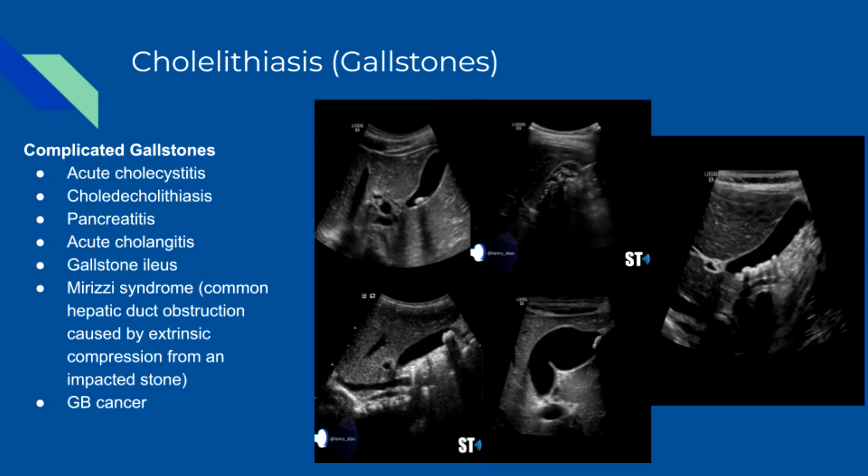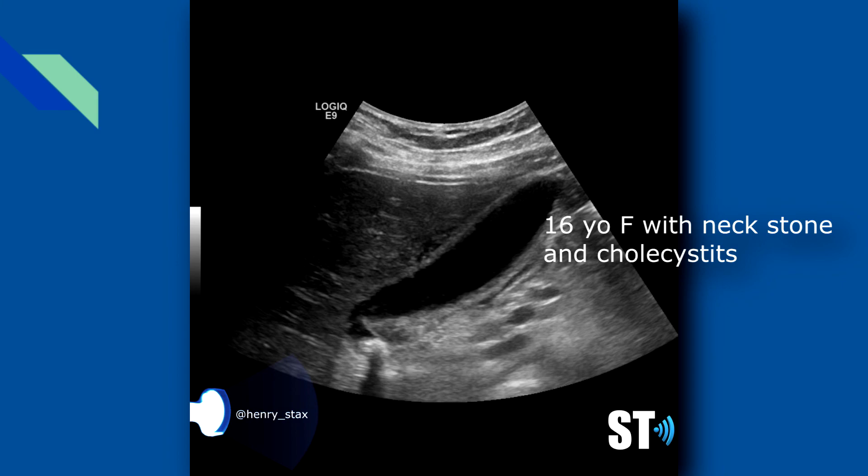Complicated gallstones can be broken down into acute cholecystitis, choledocholithiasis, pancreatitis, acute cholangitis, gallstone ileus, Mirizzi syndrome — that's when the common hepatic duct is obstructed by extrinsic compression from an impacted stone in the gallbladder neck or the cystic duct — and gallbladder cancer.